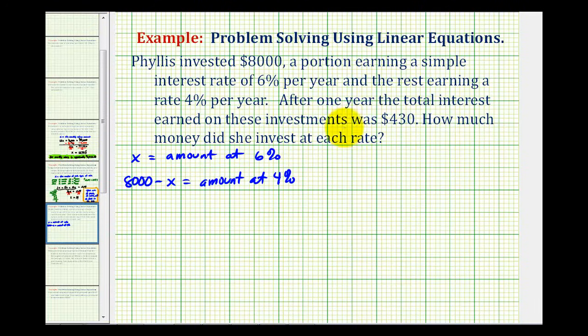We should also recognize that 6% as a decimal would be 0.06 and 4% would be 0.04. And we also know the total simple interest for both accounts is $430.